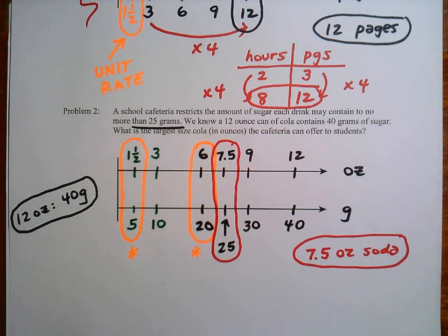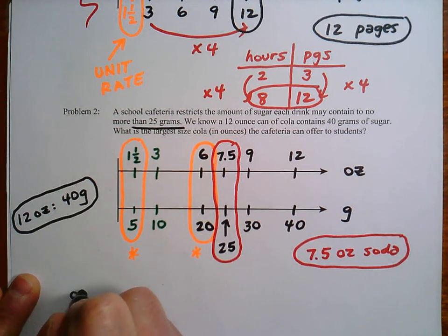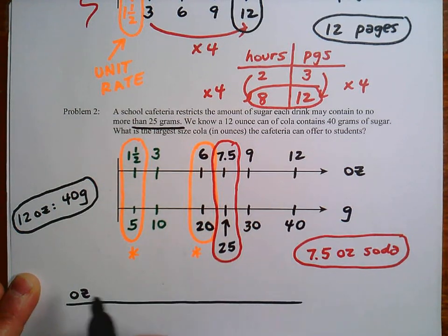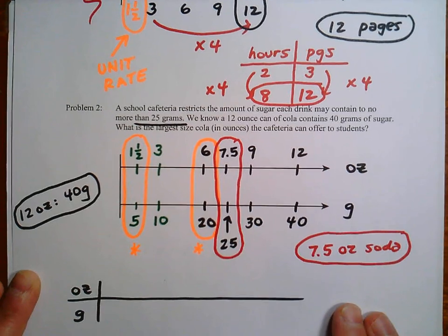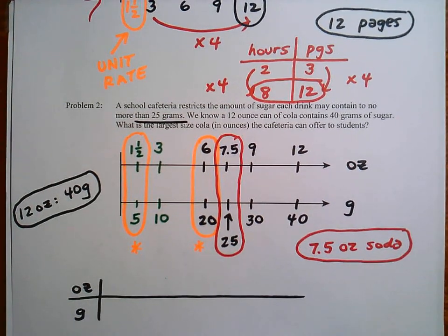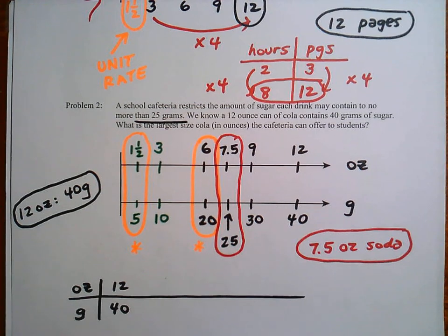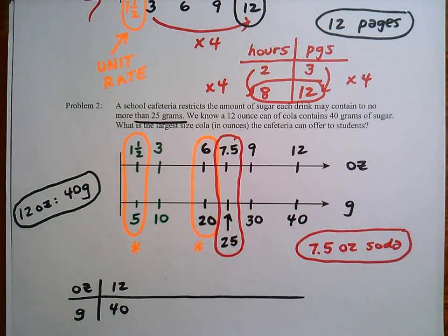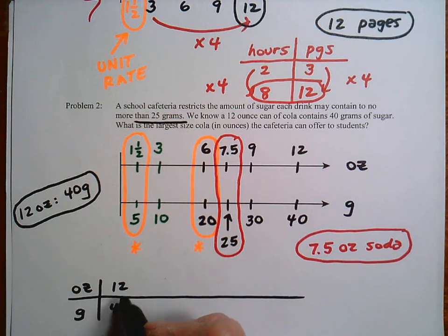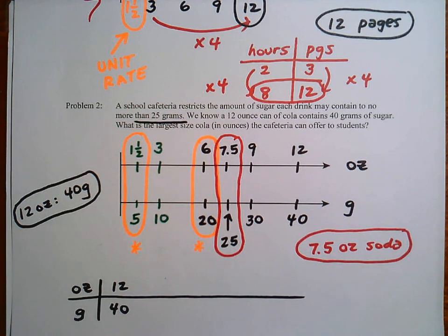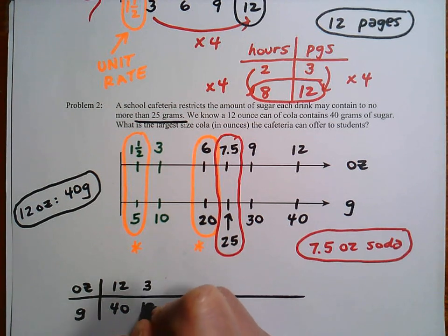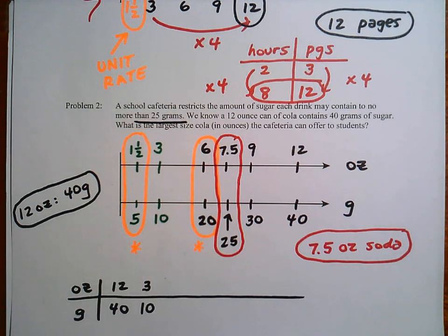Alright. So let's do maybe one more thing, just the ratio table idea and then we'll be all set. So let's just talk about how we can do this. So let's see, 12 ounces, 40 grams. So if you're going to use the table here, I can look at these and tell that you can divide them by 4. So it's a pretty quick way to do that. So you can see the connection here, 3 ounces of soda, 10 grams of sugar.